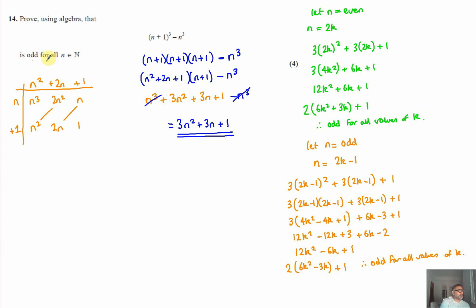And because n is a subset of natural numbers, that means it has to be either even or odd. So if I prove that they're always odd for evens and odds, therefore it's odd for all values. Therefore, odd for all n, which is a subset of natural numbers. And that's the proof complete.